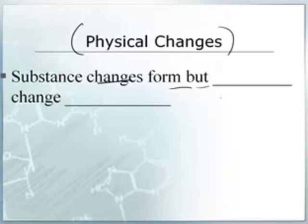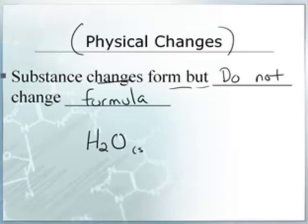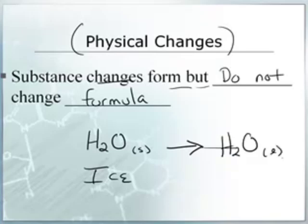All right. And a physical change. What goes on? Substance changes form. Yes. But do not change formula. The example essentially of this is if I take water and I take solid water. Now what's that better known as? Ice. Ice, baby. And we use a little arrow. We'll do a little chemical symbol. And it can turn very easily into liquid water. And that's better known as water. And that is called a physical change. H2O. It's still H2O. So, hey, we're good. So the formula hasn't changed, but it's changed from a solid form to a liquid form.